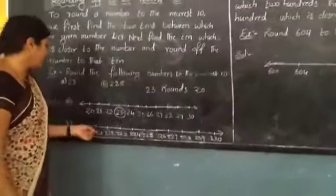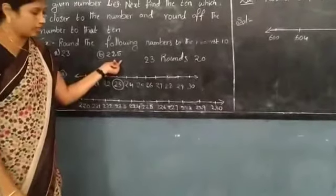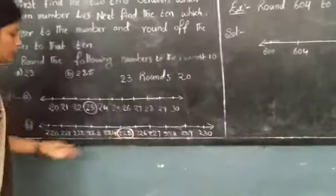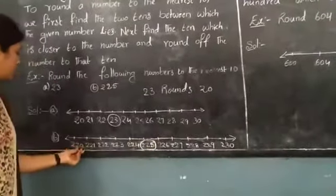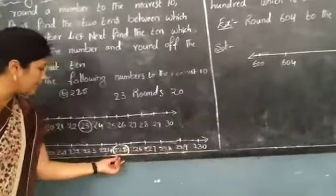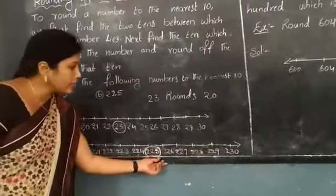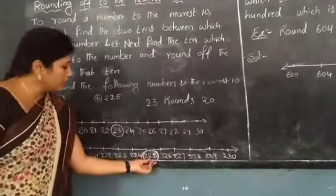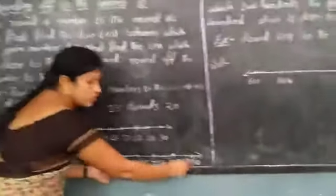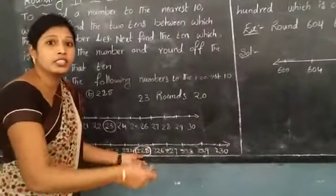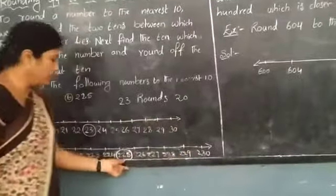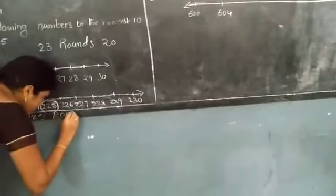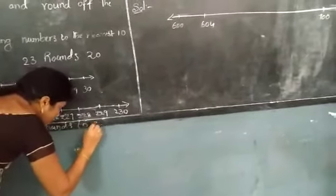See example 225. Here, 225 — mark this number. It lies between 220 and 230, and it is exactly the middle of the line, the exact middle of 220 and 230. In this situation, the midway number is always rounded to the largest 10. So 225 rounds to 230.